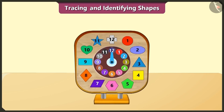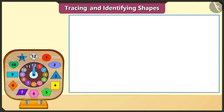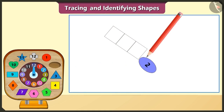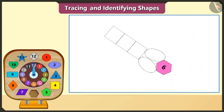Friends, now let's trace some of these shapes and draw a picture. First of all, we will trace the square-shaped block and draw one, two, three squares. Now we will trace the hexagon shape by tracing the hexagon block under these two ellipses.